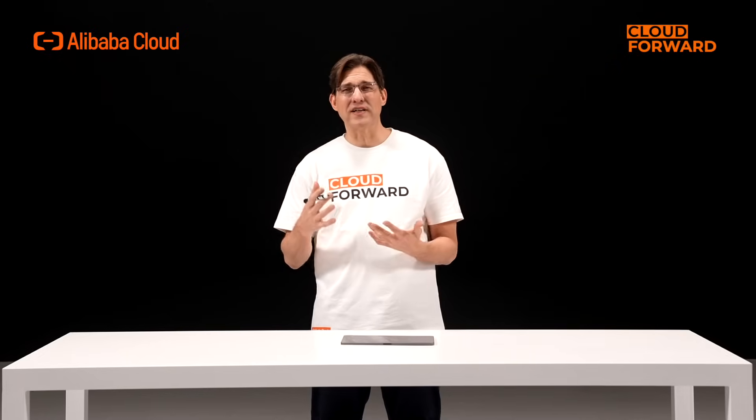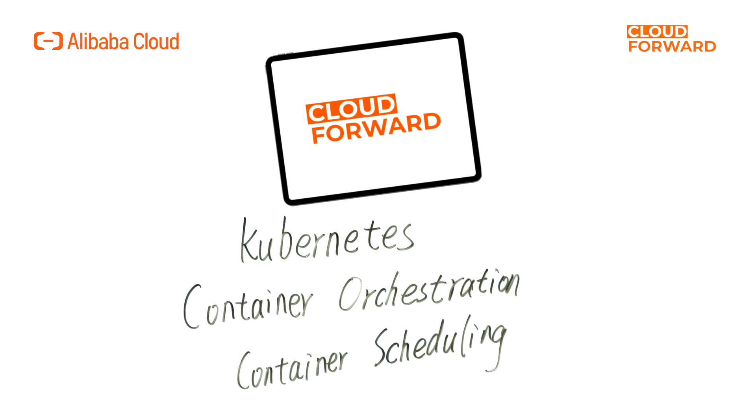An increasing number of AI big data applications seek to simplify management, enhance elasticity, and optimize resource utilization through containerization. Kubernetes has become the de facto standard for container orchestration and scheduling. Leveraging Kubernetes orchestration capabilities, applications aim for stable, efficient, and cost-effective resource utilization among various workloads. How does the ACK cloud-native AI suite, based on standard Kubernetes, assist in efficiently scheduling AI and big data tasks?